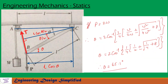Now for the second portion: P equals 2W. Substituting P equals 2W into the expression and simplifying, we get theta equals 65.1 degrees. This is the solution for the second portion of the problem.